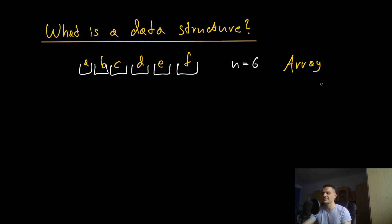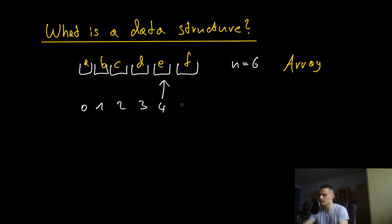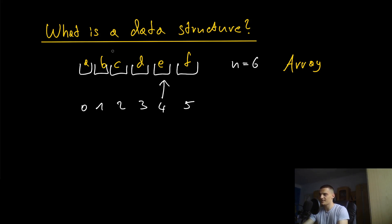This data structure has certain advantages and disadvantages. An advantage is that I can access each element without going through all the other elements. To access this element here, I just say I want to access index four — zero, one, two, three, four, five — and I can access e without a problem. I don't need to go through a, b, c, d to reach e.